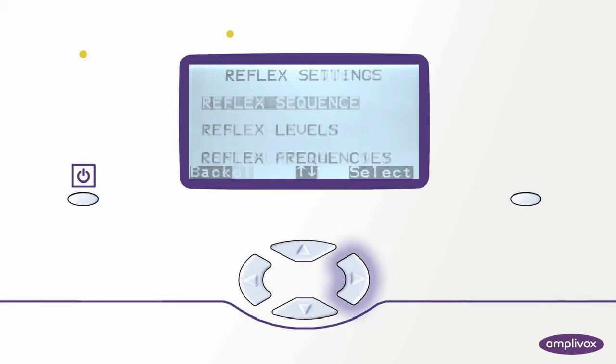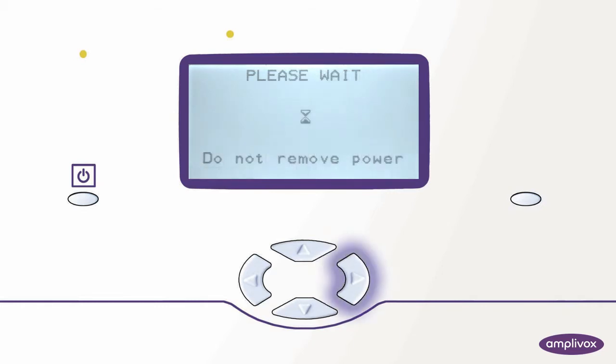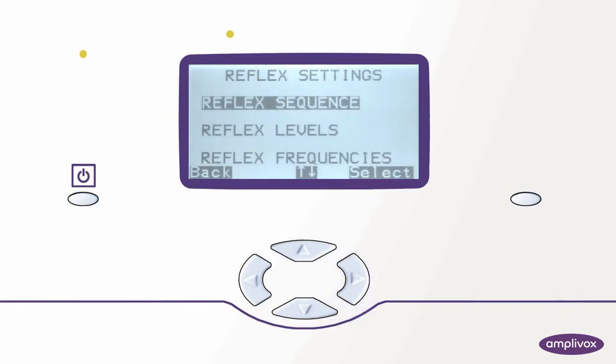The first thing we would like to do is to set the reflex sequence. We are offered three different options on how to run a reflex test. For now we would only like to perform ipsilateral only testing so this is what we select. After confirming our selections we will be brought back to the main menu of the reflex settings.